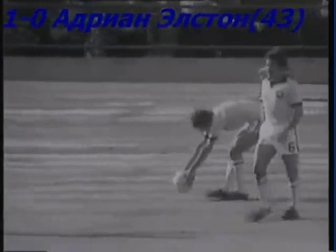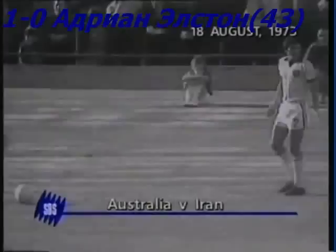The final between Australia and Iran, who had both survived tough preliminary groups. Two perfectly placed free kicks by full-back Doug Uchizinovich presented Adrian Alston and Peter Wilson with the opportunities to score Australia's first and third goals.